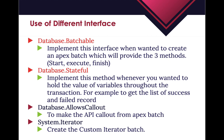When implementing the database.batchable interface, we need to make sure the access modifier of our class is global and we have implemented all three methods: start, execute, and finish. The next interface is database.stateful. This is used when we want to hold the state of our variables - for example, to track how many records were total, how many succeeded, and how many failed.